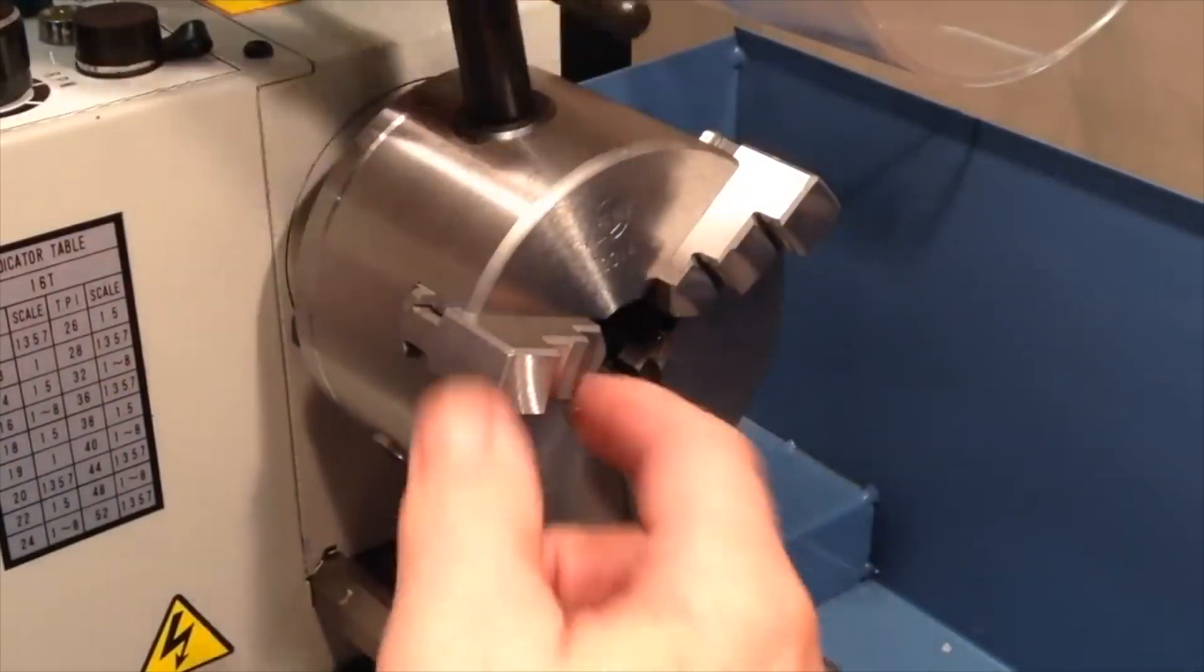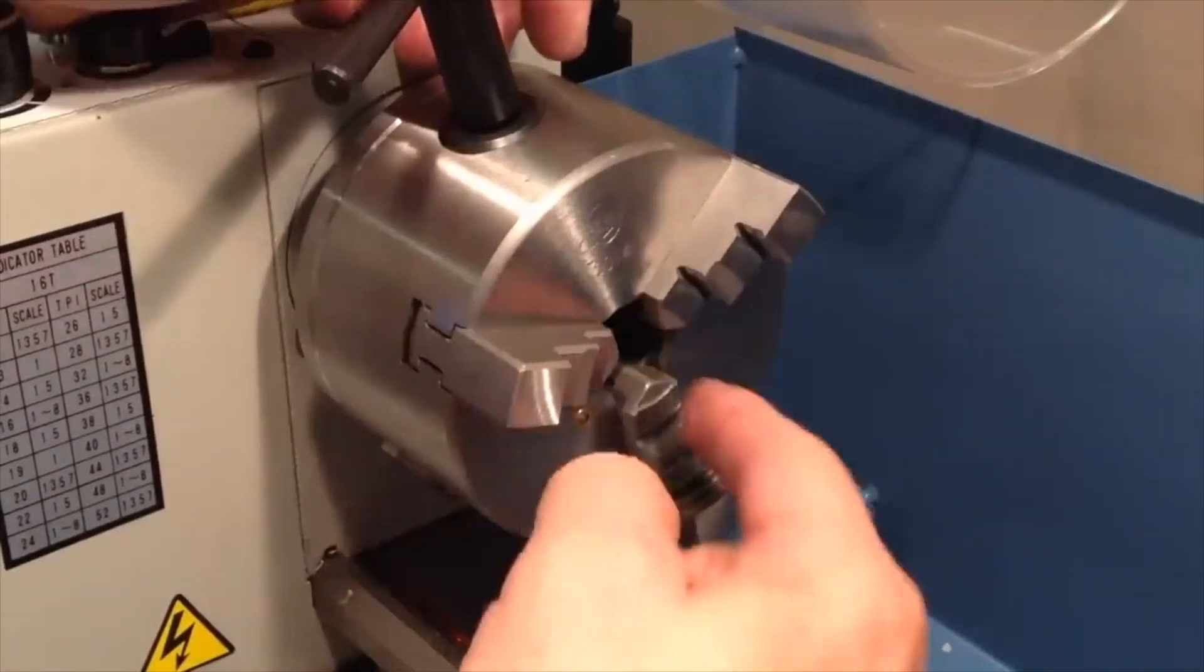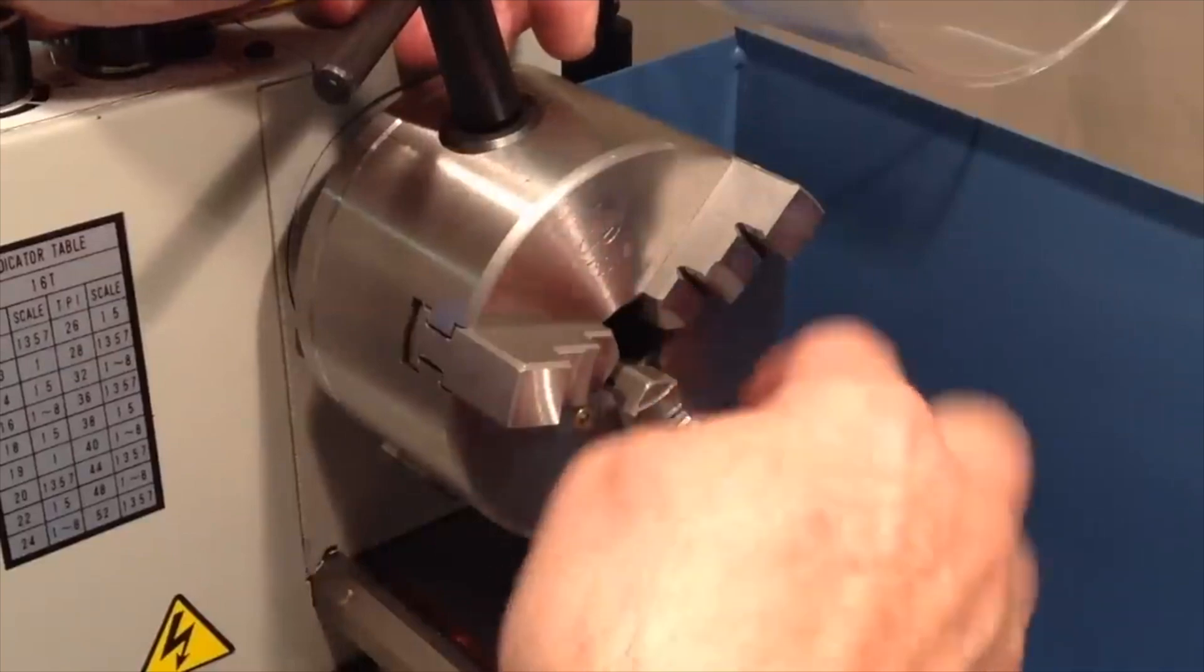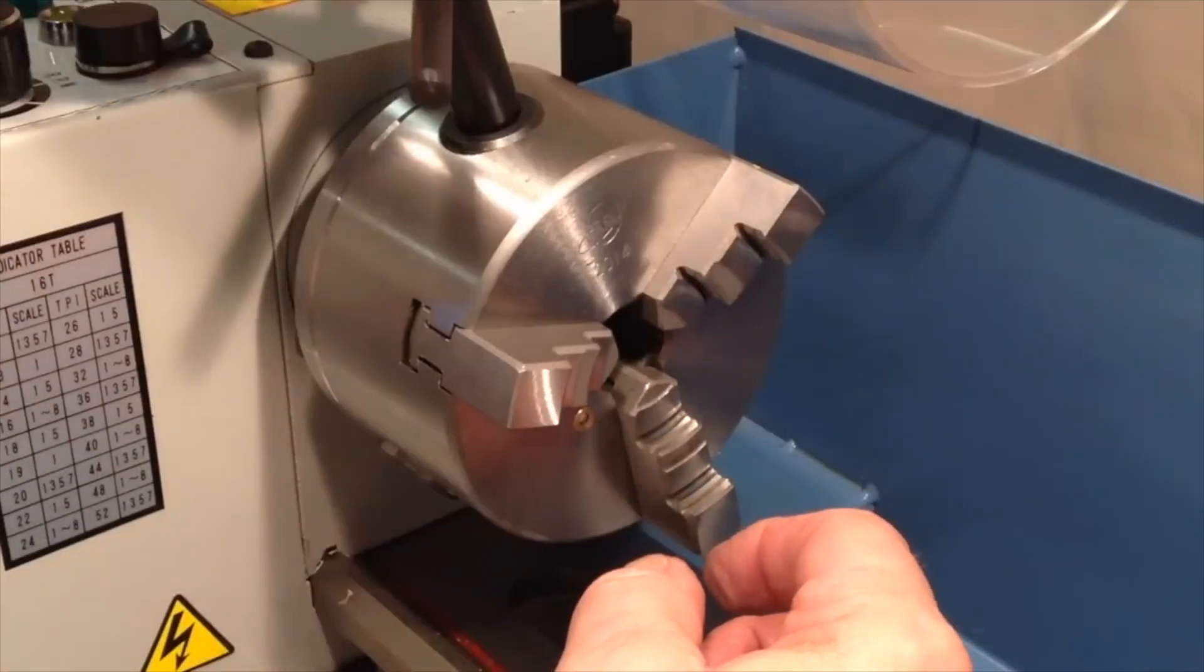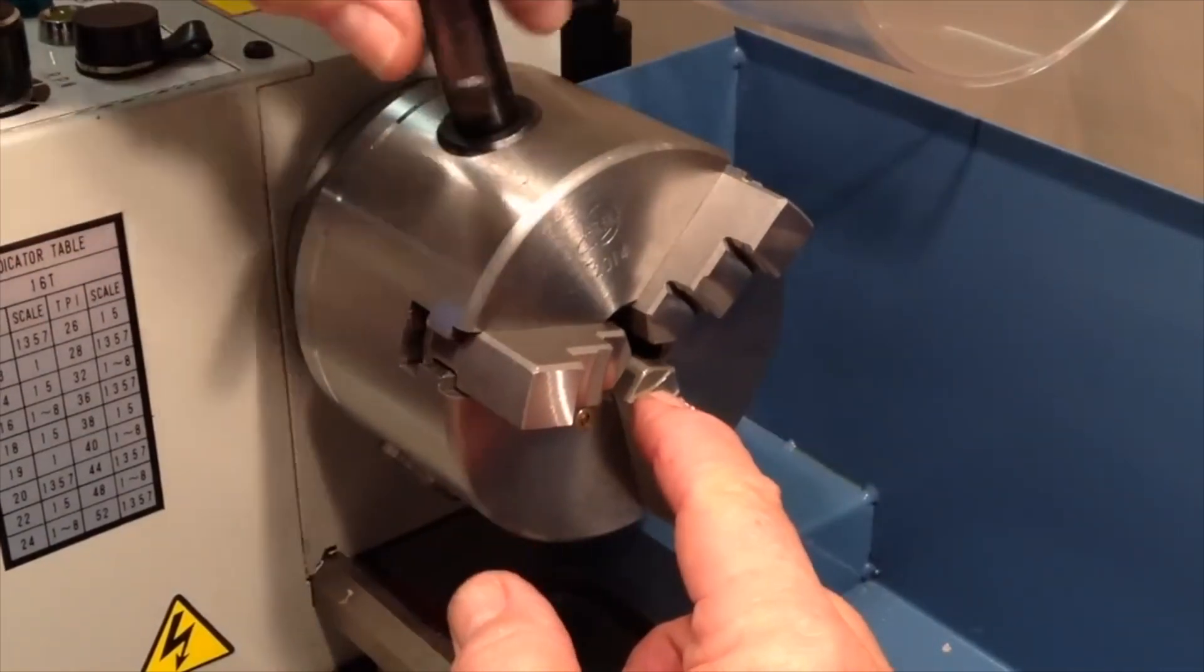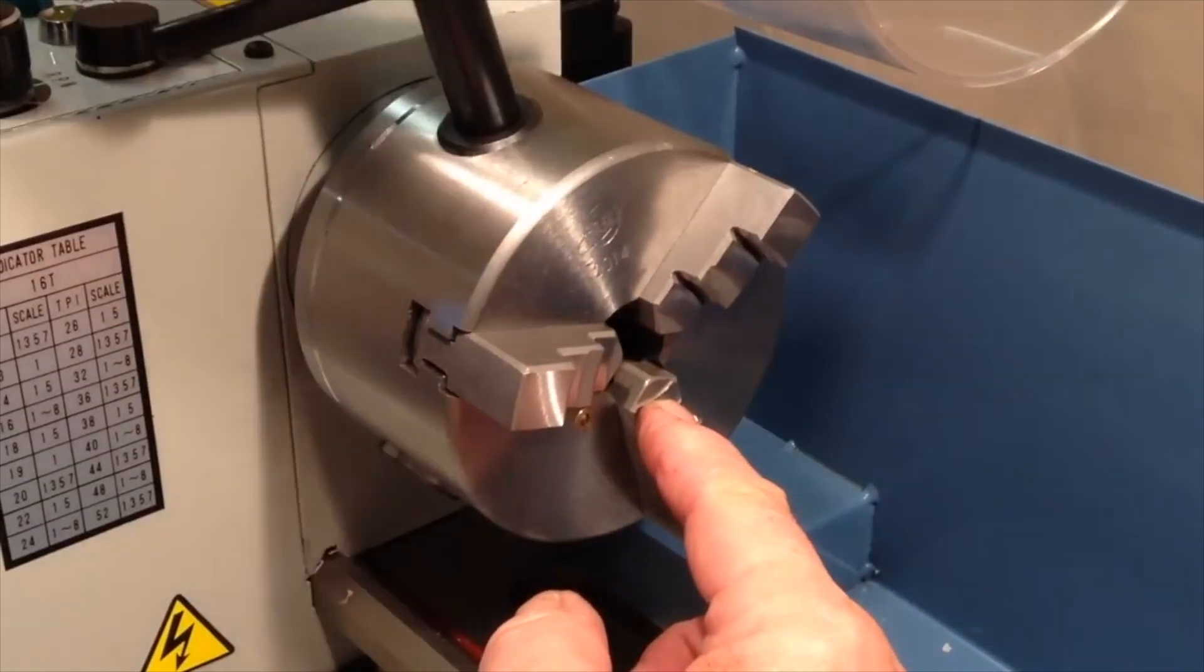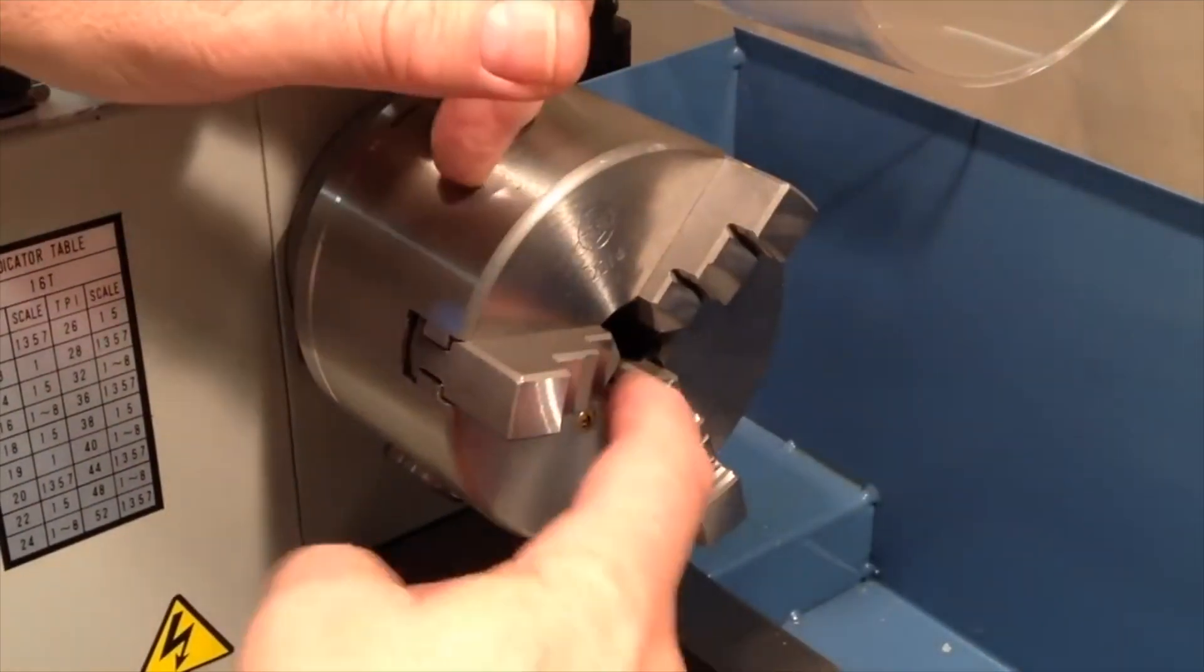Now if you don't do it that way, if you don't get them in the right sequence or you don't get them properly aligned, what you'll find is when you tighten the jaws up they don't meet in the center. One of them will be off kilter, it'll be skewed outward from the other two or maybe one of them will be closer in than the other two. But they won't meet in the center, so if that happens just wind them out again and start over. Make sure you do them in sequence one two three and they should meet in the center.